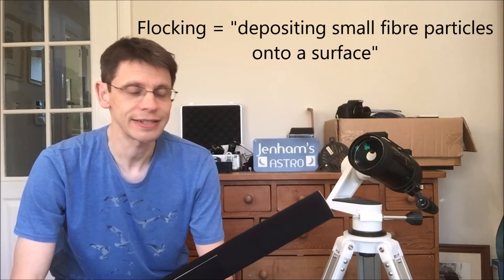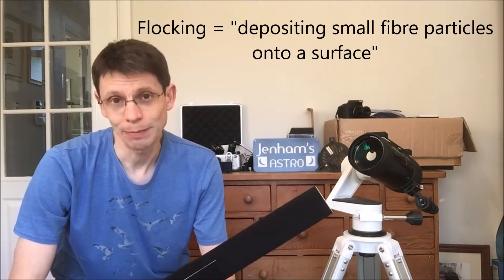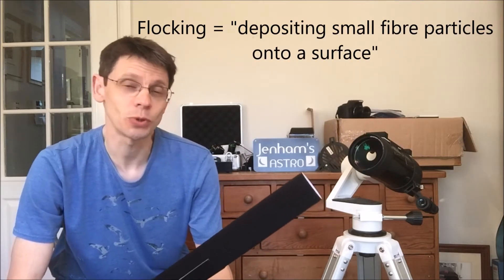Basically it's this, it's called flocking paper and it is matte black paper. The idea being that it absorbs light and we're going to use it to try and improve some of the image contrast that you get with the C90.